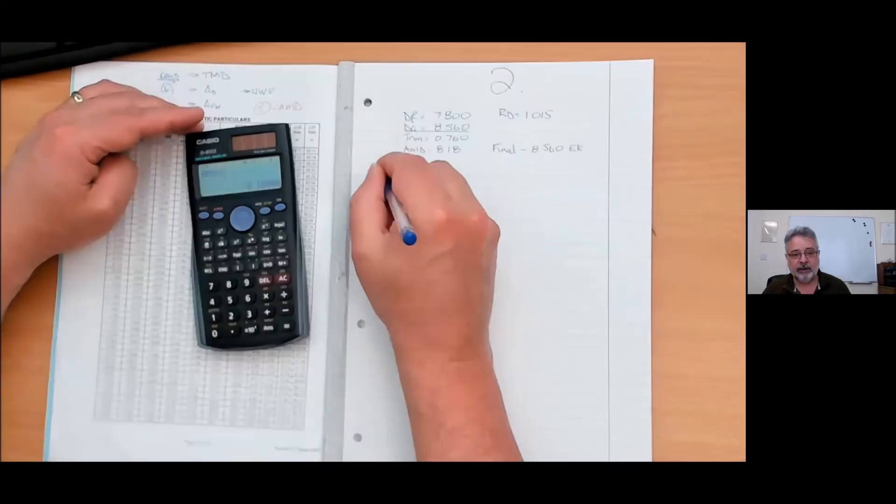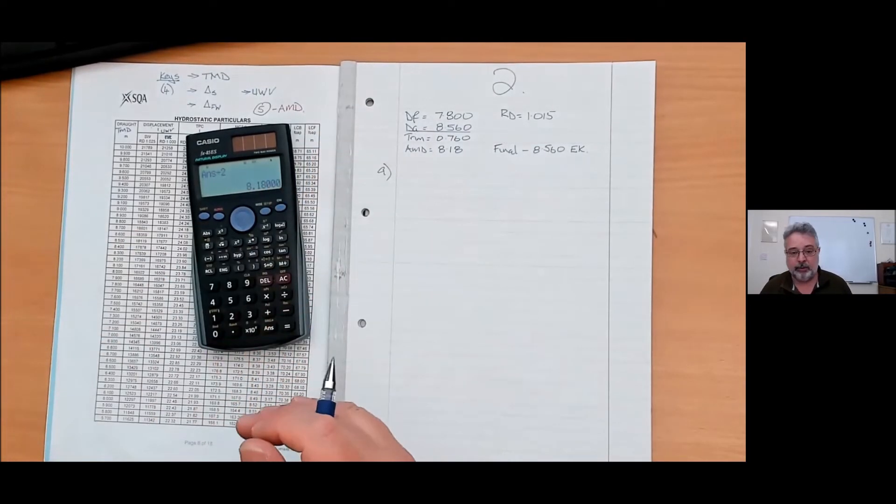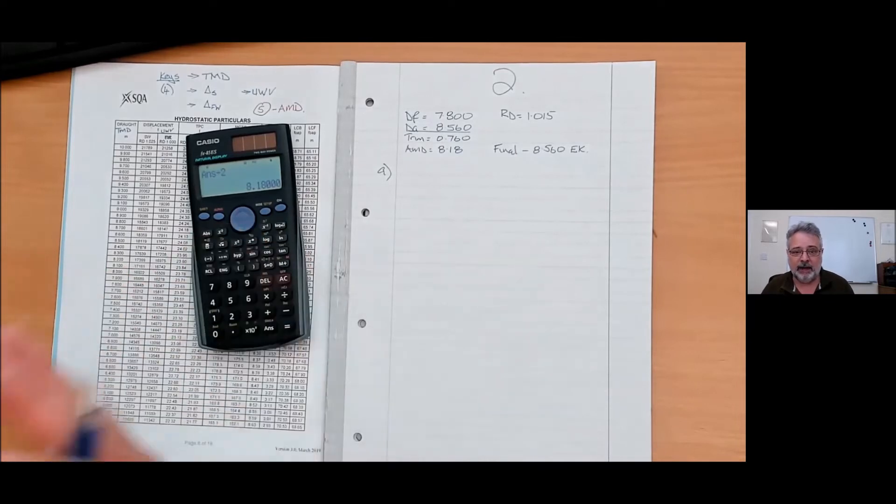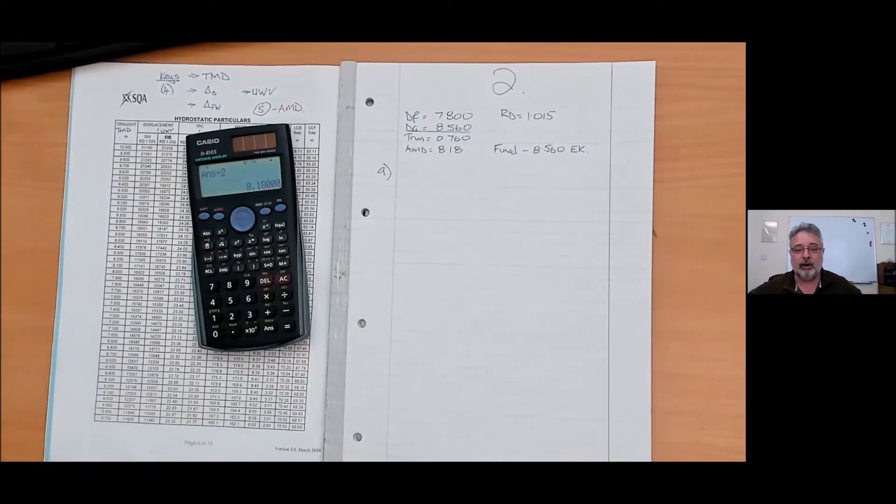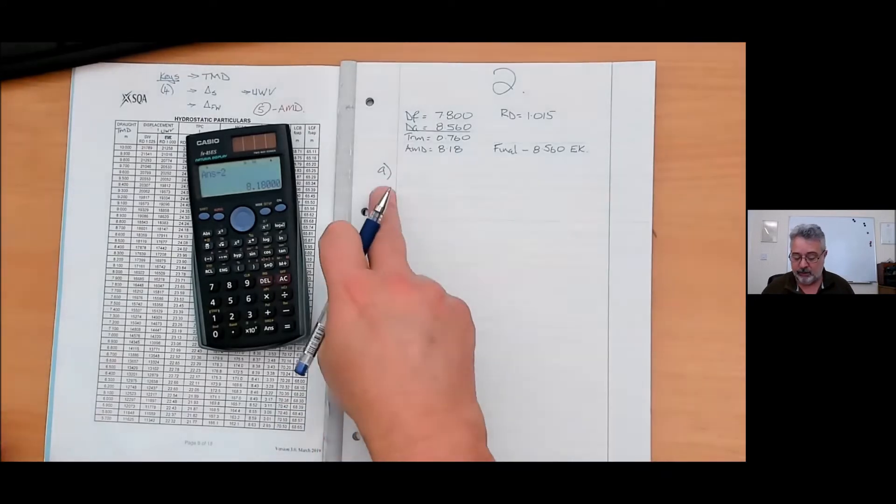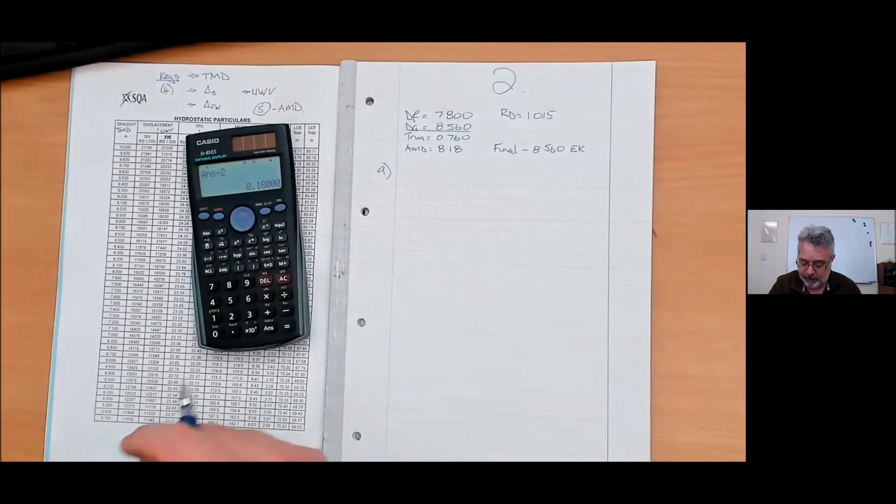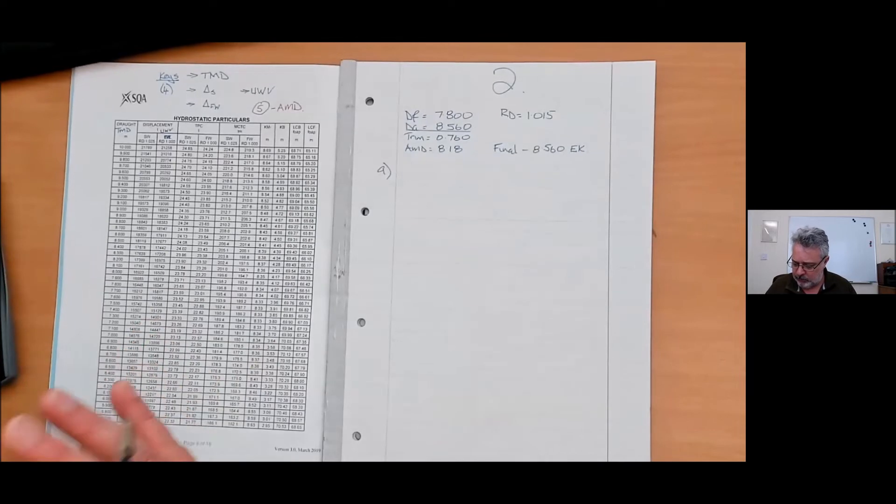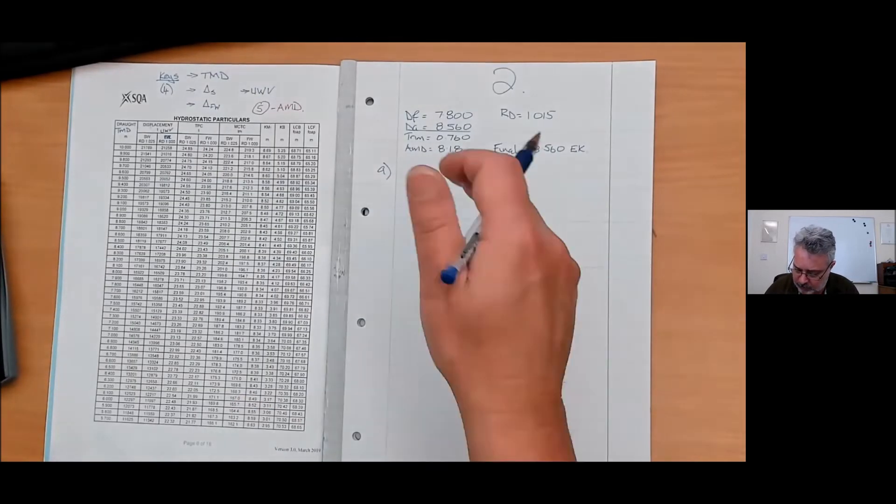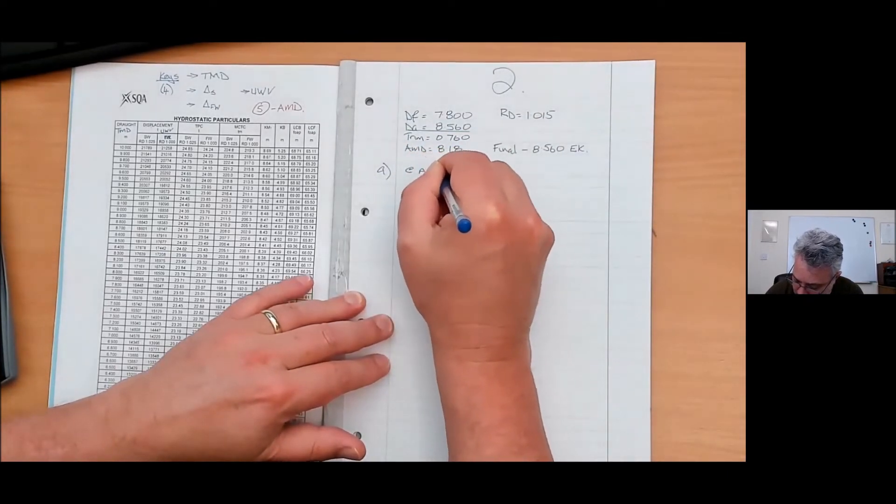Let's do part A. It says don't write in the margins, but the ABCs, these are the SQA labeling. So I'm putting their labeling in their margins so they can find the sections I'm working on. Part A, to find cargo to load, we simply want two displacements, which means two TMDs.